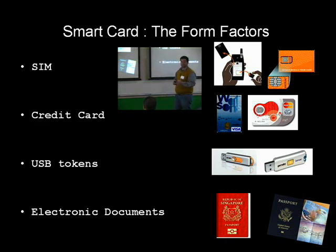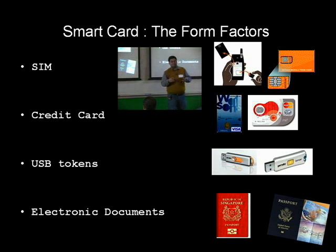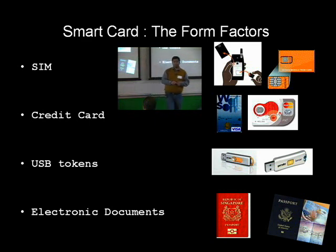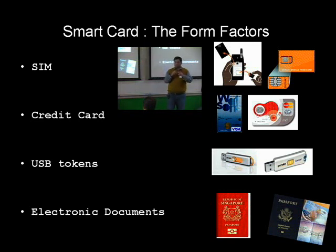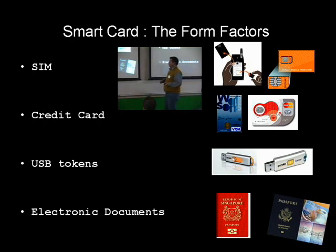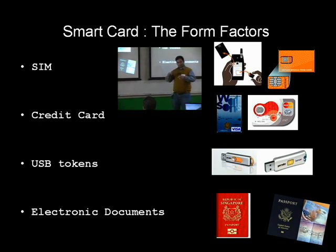There is also a credit card form factor. In the United States, banks mostly issue magnetic strip cards, but in most European countries it is mandated to have smart chip cards. There is another interesting format — USB tokens — where instead of carrying a separate reader in which you insert the card, the reader and card are together in the form of a USB token. And finally, the latest form factor: if you get a US passport these days, a smart card chip is embedded in the cover. It's actually a contactless smart card, so you can wave it from a distance and your data is read.